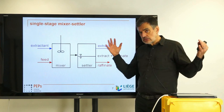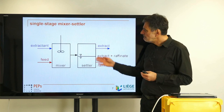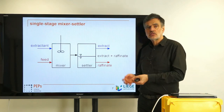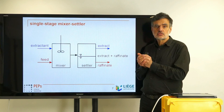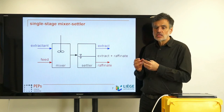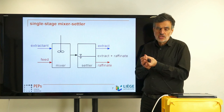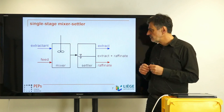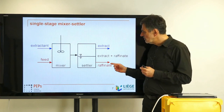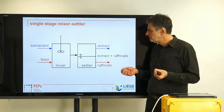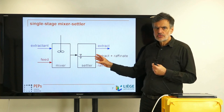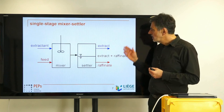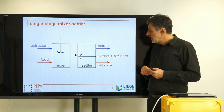Flow rates in the settler are around one to two centimeters per second, so if you have high flow rates the equipment must be large. The two phases separate because the droplets move due to gravity toward the main interface, where they meet and coalesce — they join to form a coherent phase. You can then separate the raffinate and the extract as two clear phases in the ideal case. So you wind up with the extract and the raffinate.